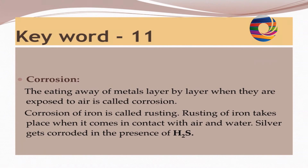Keyword: Corrosion. The eating away of metals layer by layer when they are exposed to air is called corrosion. Corrosion of iron is called rusting. Rusting of iron takes place when it comes in contact with air and water. Silver gets corroded in the presence of H2S.